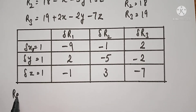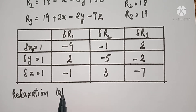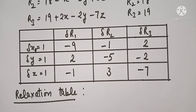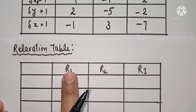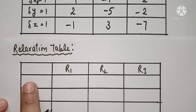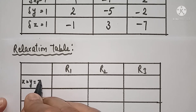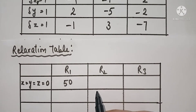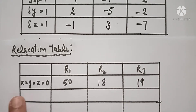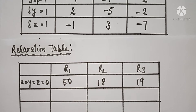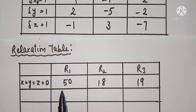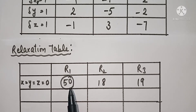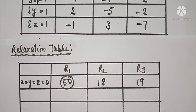Relaxation table के लिए बहुत ध्यान से देखना है। Table में R1, R2, R3 की values लिखेंगे। Initial approximation x=y=z=0 पर R1=50, R2=18, R3=19। अब देखना है तीनों में जो number सबसे बड़ा है — या 0 से जितना दूर है — उसको सबसे पहले reduce करना है। यहाँ 50 सबसे बड़ी value है जिसका magnitude बड़ा है, तो 50 को reduce करना है।